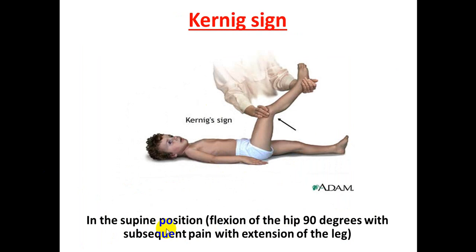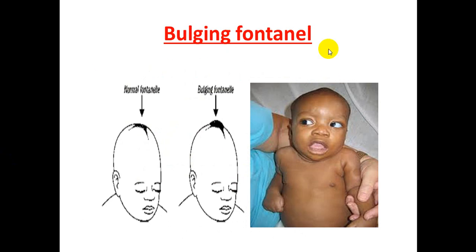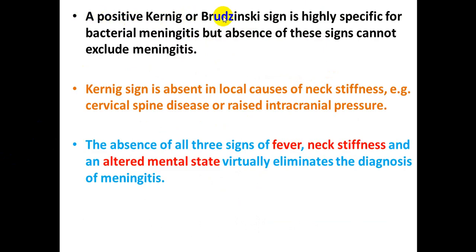Kernig's sign is performed in the supine position: flex the hip and knee joints, then extend the knee, which causes pain in the hamstring muscles. Brudzinski's sign is also performed in supine position: passive flexion of the neck causes involuntary flexion of the hip and knee. Both signs should be done in patients older than 1 year. A bulging fontanel may be present if the anterior fontanel is open, due to raised intracranial pressure. A positive Kernig's and Brudzinski's sign is highly specific for bacterial meningitis.